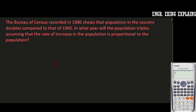in 1980 shows that the population in the country doubles compared to that of 1960. In what year will the population triples, assuming that the rate of increase in the population is proportional to the population?